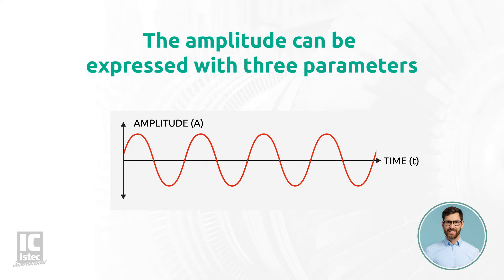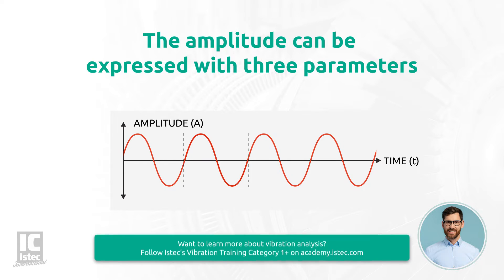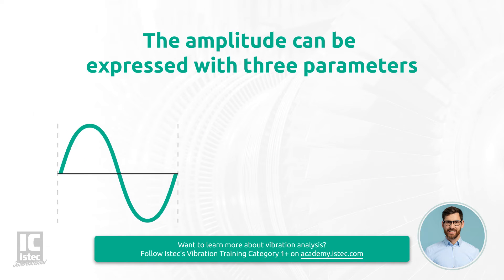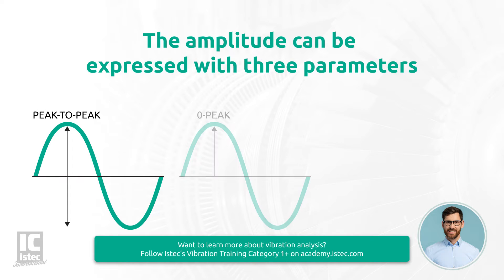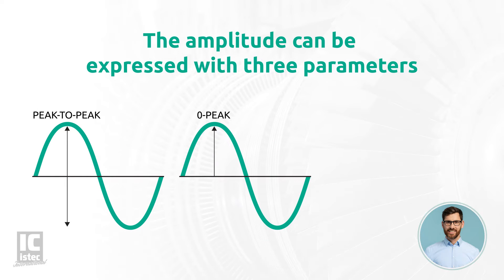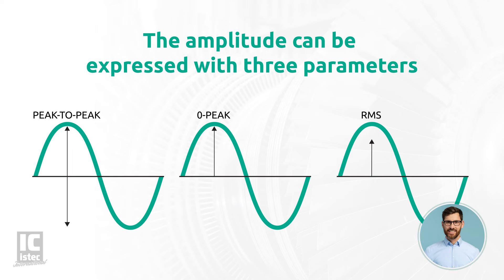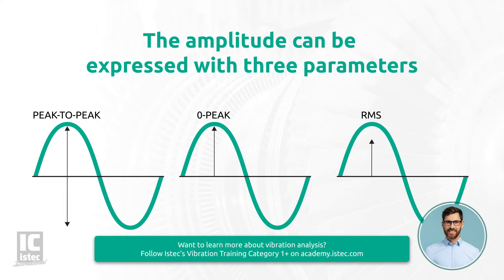The amplitude or the size of a vibration can be expressed with three parameters: peak-to-peak, zero-peak, and RMS. All three parameters are used when performing vibration measurements, and each of them has its own added value. This added value will be covered in detail in later modules during this training. For now, it is important to understand the relation between these parameters.